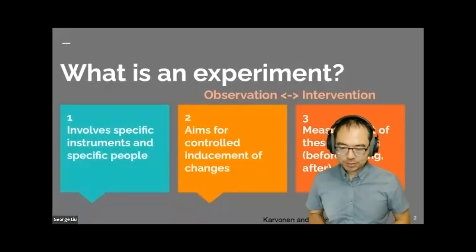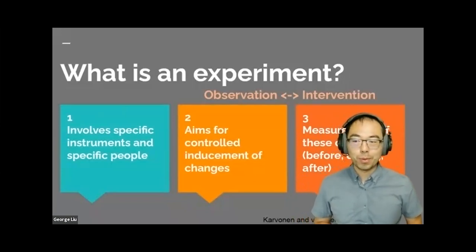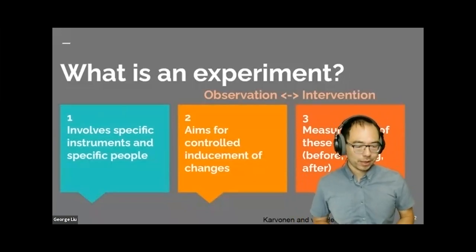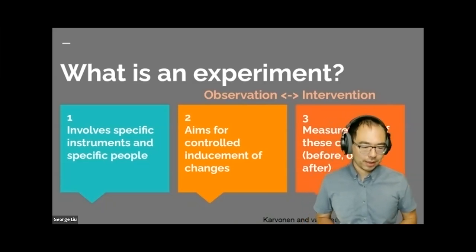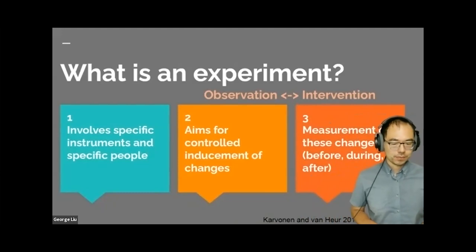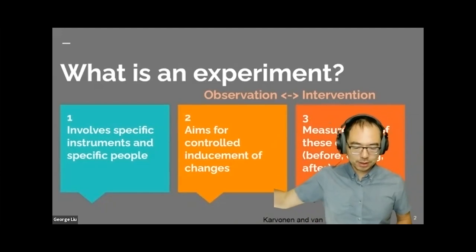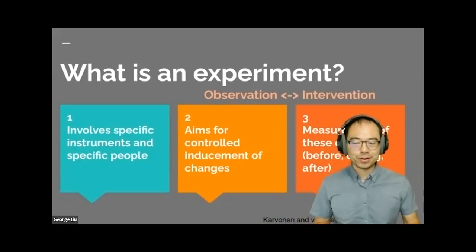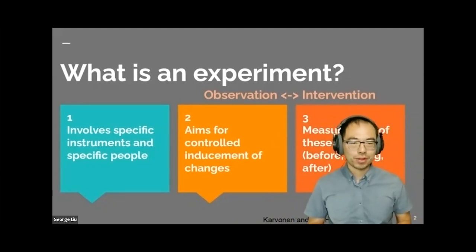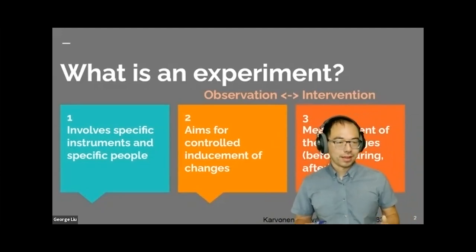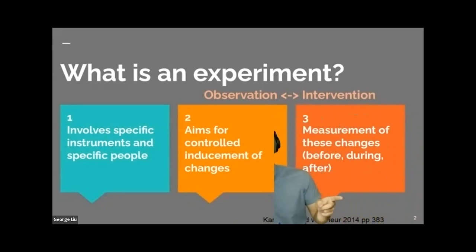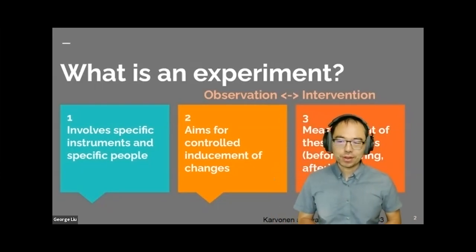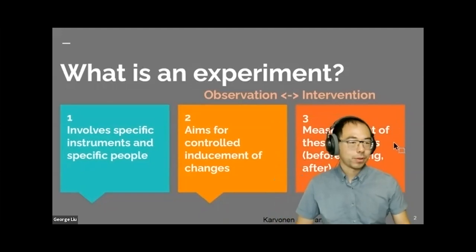What is an experiment? It involves: specific instruments and specific people; controlled inducement of changes in a laboratory environment; and measurement of those changes before, during, and after. That's our traditional concept of an experiment. The problem with bicycle research is that the world isn't that neat, and it's hard to put cycling into a fully controlled laboratory.